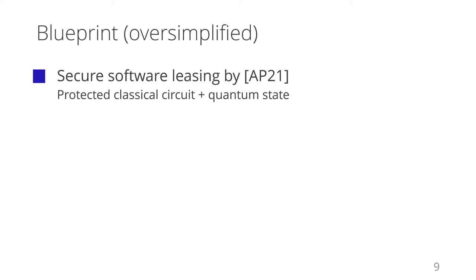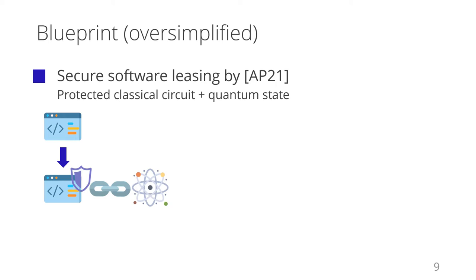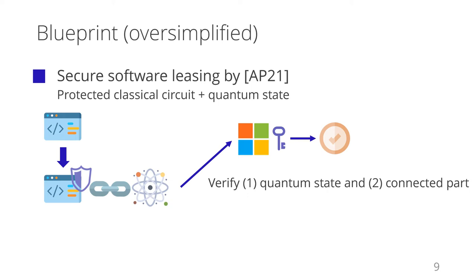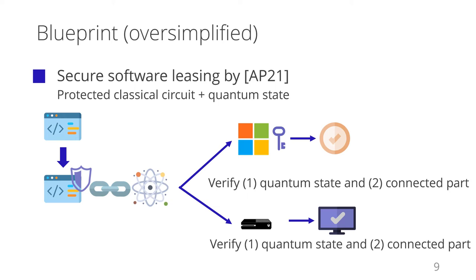I explain the high-level idea for how to achieve Secure Software Leasing. The scheme by Ananth and LaPlaca is as follows. Software is modeled as a classical circuit. We somehow generate a protected circuit in the classical way and connect it to a quantum state. When we return the leased software to the lessor, the lessor checks whether the quantum state part is valid. Then the lessor also checks the protected circuit part is correctly connected to the quantum state part. If both are valid, the returned software is valid. When we run the leased software on a legitimate platform, the platform does the same check — it checks both the quantum part and the connected part.